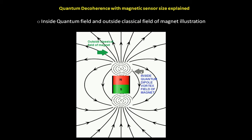You can say that this dipole vortex field configuration of magnetic flux produces the outside field, but in quantum mechanical theory terms we don't say that. We say that the quantum field — which are these two dipole vortices joined together — that this quantum field decoheres to the outside macroscopic field. So this is a more precise description.